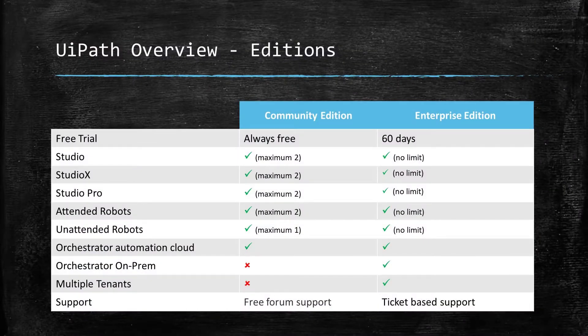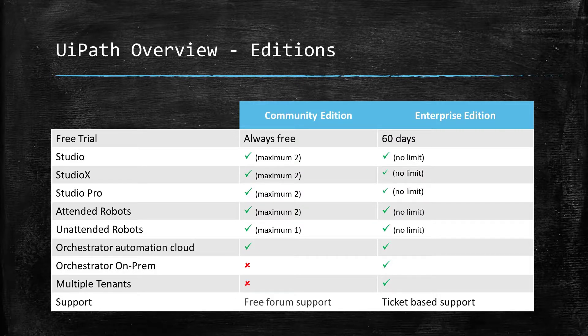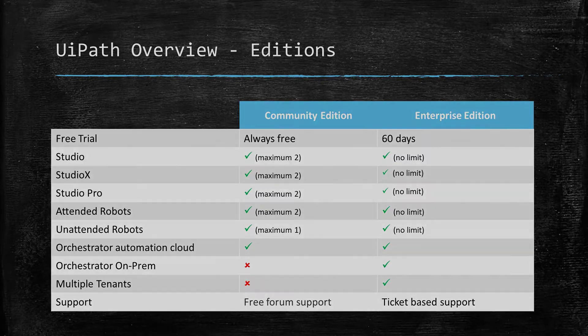Throughout this course, we'll be mostly using UiPath Community Edition, although I'll be showing you how to install and configure the Enterprise Edition, which you can get a 60-day free trial. In the next video, we'll go ahead and set up a UiPath Automation Cloud account and install UiPath Studio.